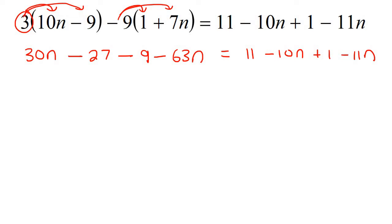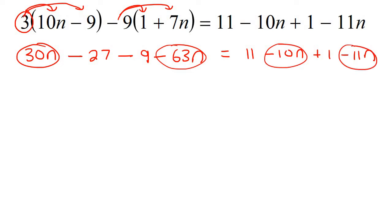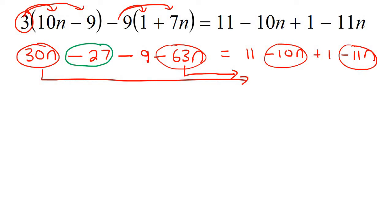Now we need to decide if we're going to put all the variables on the right or the left. The variables are the ones with the letters. I'm going to put them on the right, but you can definitely keep them on the left — it doesn't matter. So I'm going to have to move these two over to the right-hand side. And then all of the numbers — they're going to have to all be on the left-hand side.